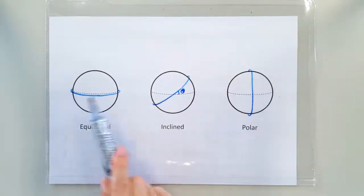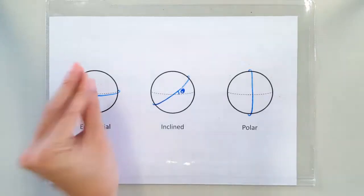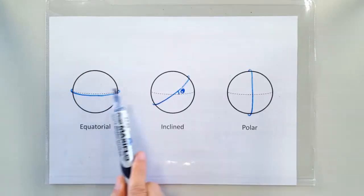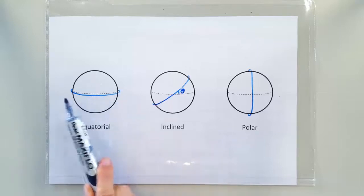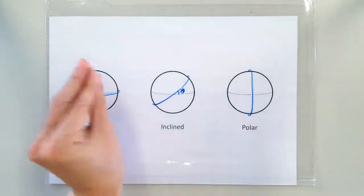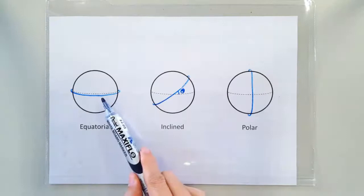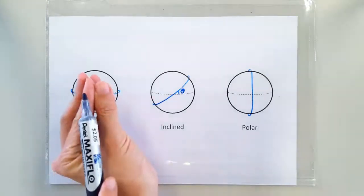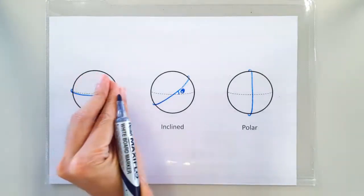Say we have a satellite that's orbiting in the equatorial plane. Remember the Earth is spinning, so if the satellite is going around the Earth at the same rate as the Earth's rotation, then this satellite is going to be geostationary, because the satellite is going to remain on the same spot above the Earth.